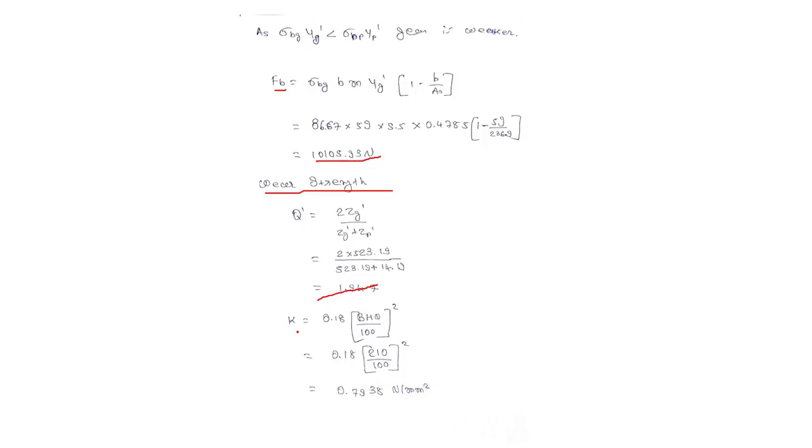The equation of k we can get from the standard data book. The pinion is made of steel and gear is made of cast iron, so we can use this equation.